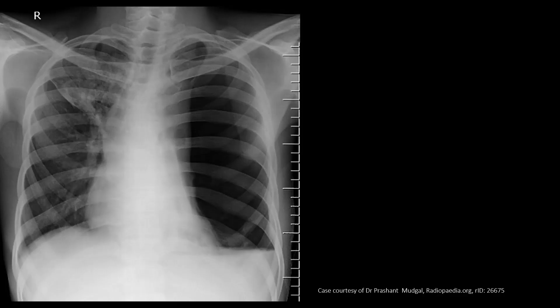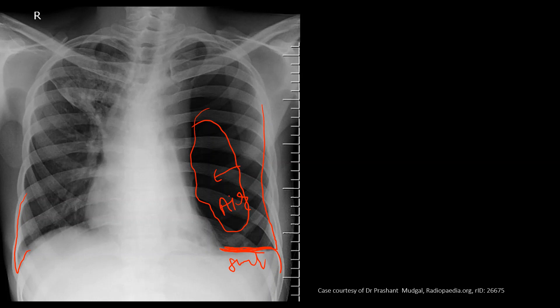In this x-ray, the costophrenic angle on the right side is visible, but on the left side it does not look clear. Instead, we can see a sharp water level line on the left side, indicating the presence of both air and fluid. The area above the water level looks hyperlucent, indicating air. This is a case of hydropneumothorax.